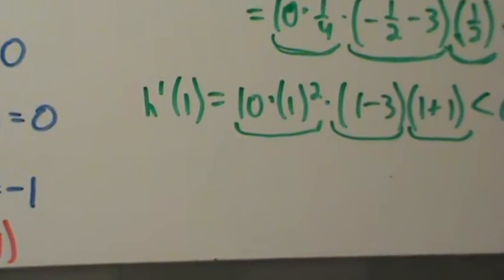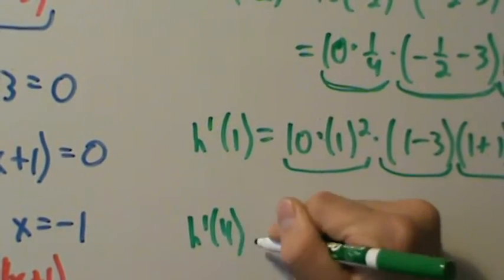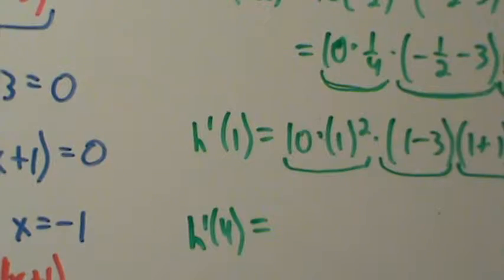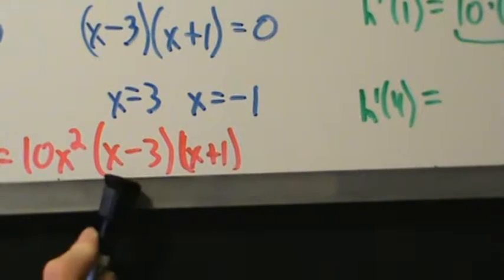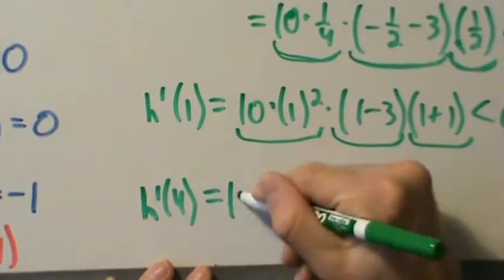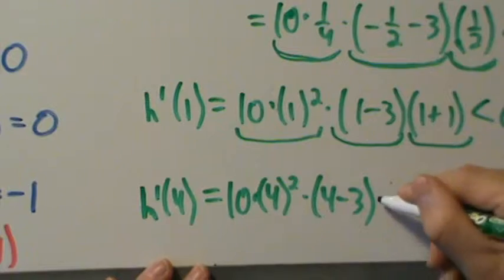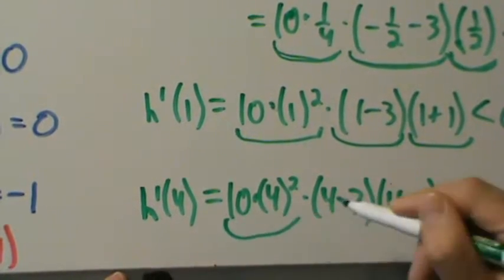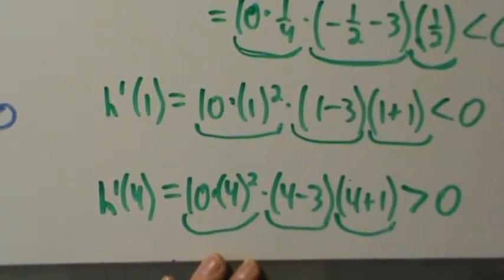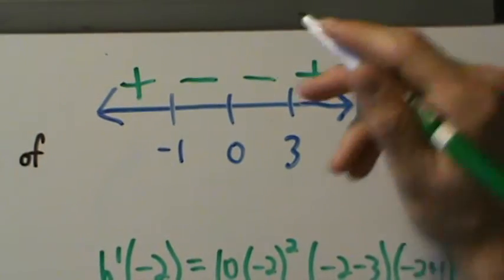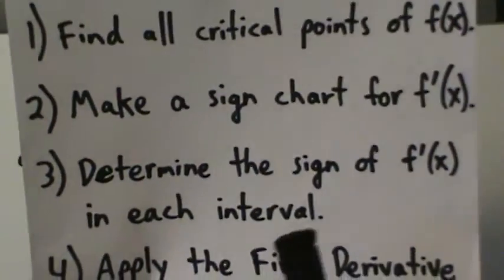One more interval to check. From 3 to infinity, pick x equals 4. So h prime of 4 equals 10 times 4 squared times the quantity 4 minus 3 times the quantity 4 plus 1 — positive times positive times positive, which is positive. So the derivative is positive in this interval.